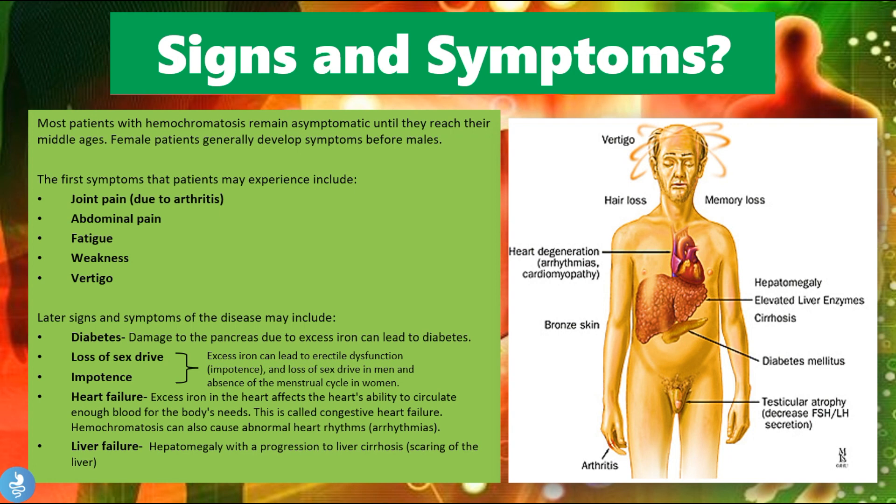Most patients with hemochromatosis will remain asymptomatic until they reach middle age. Female patients, however, generally develop symptoms earlier than males. The first symptoms patients may experience include joint pain due to arthritis, abdominal pain, fatigue, weakness, and vertigo.